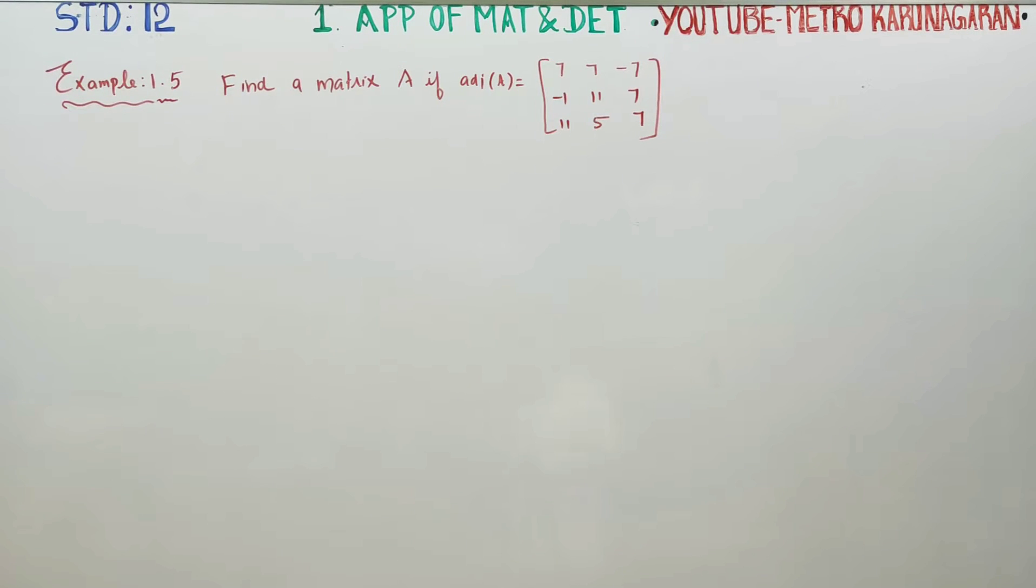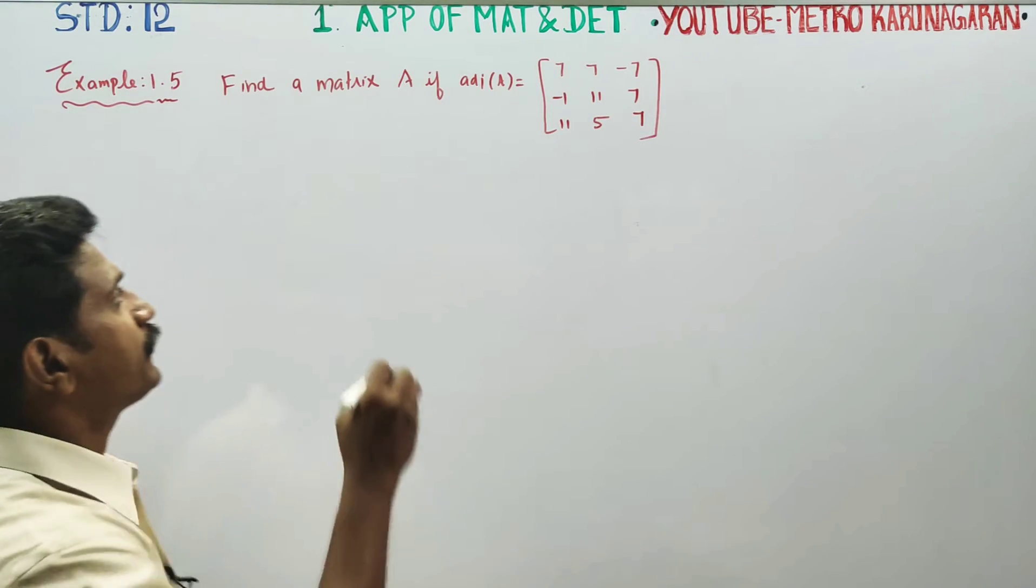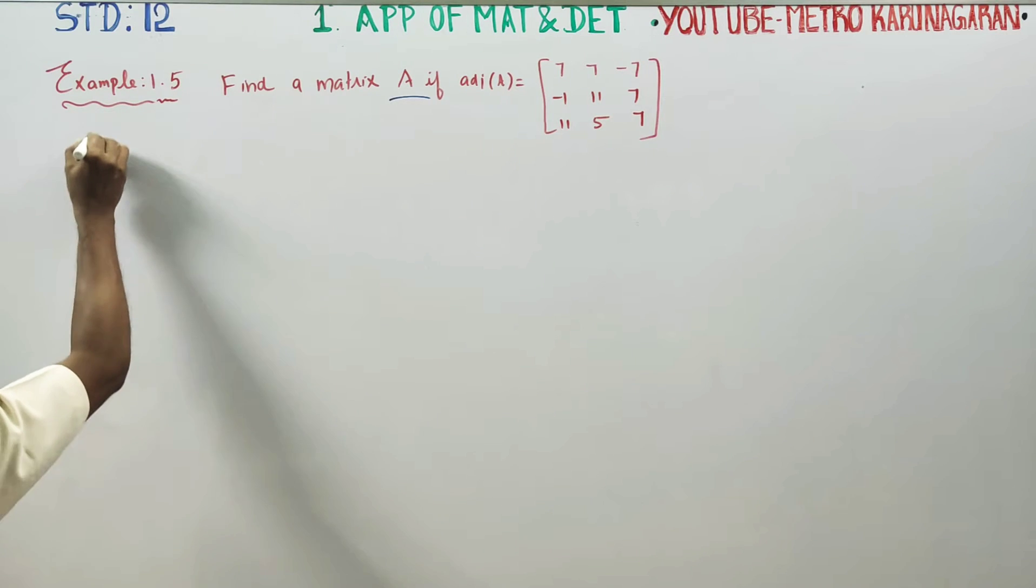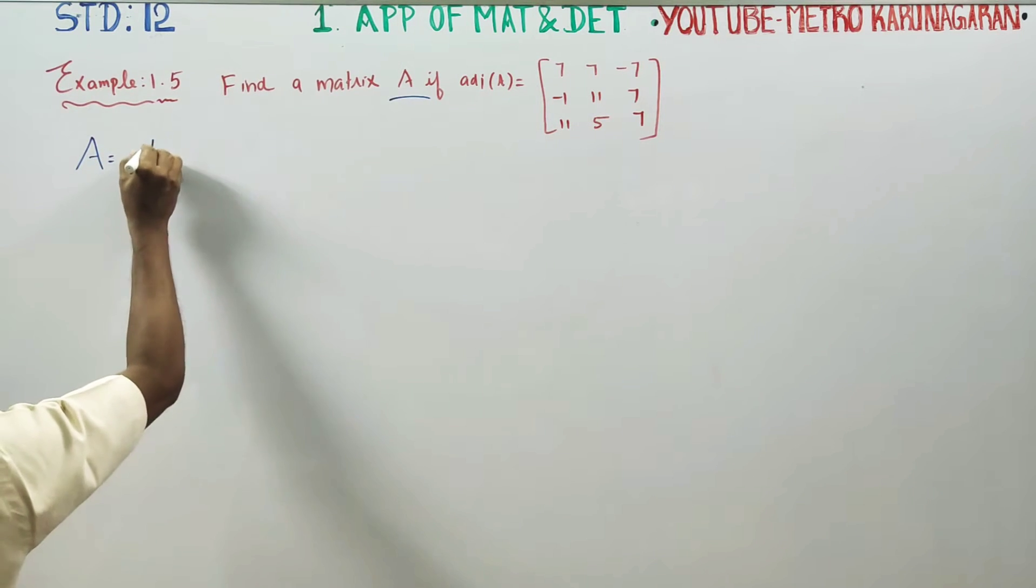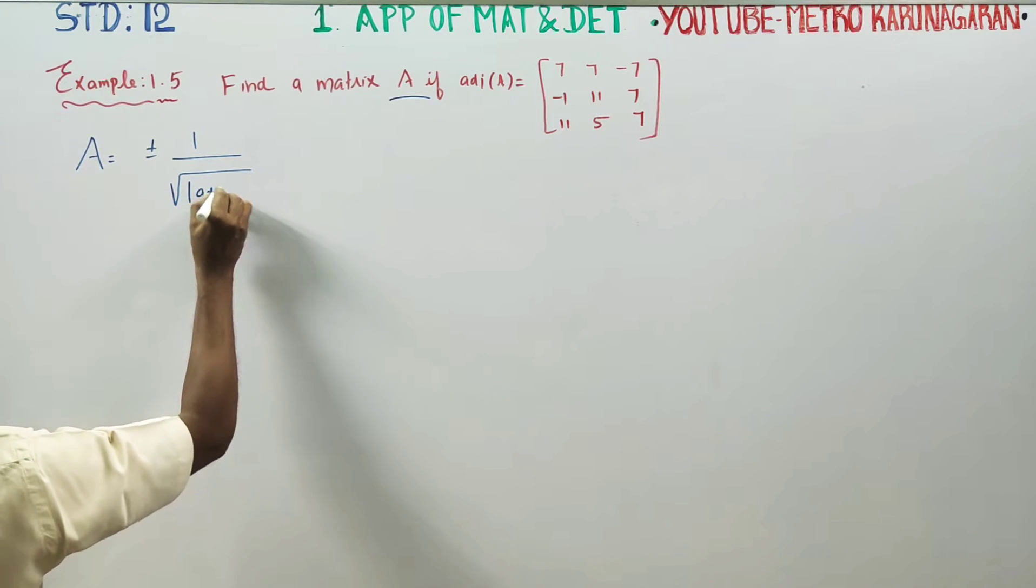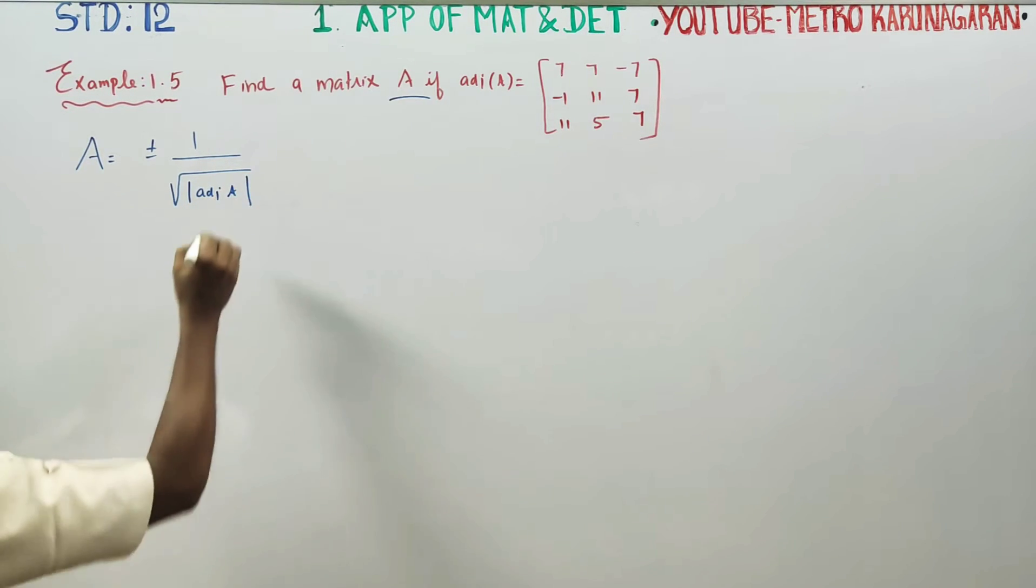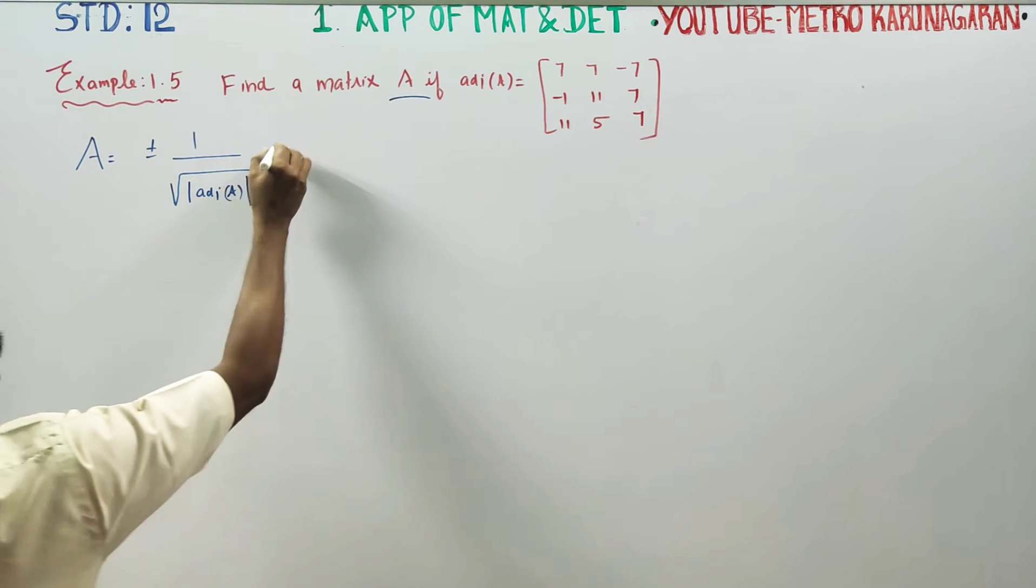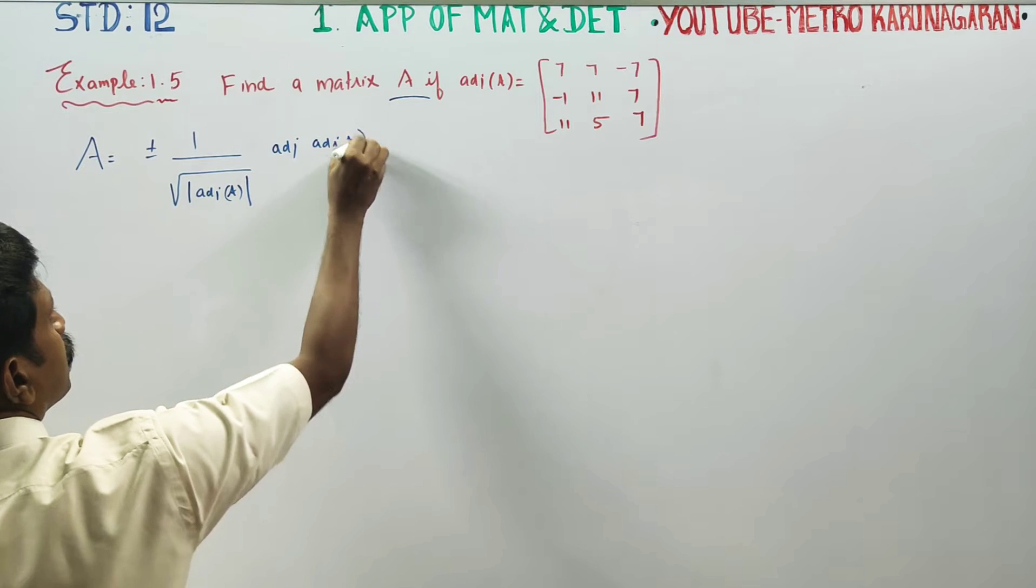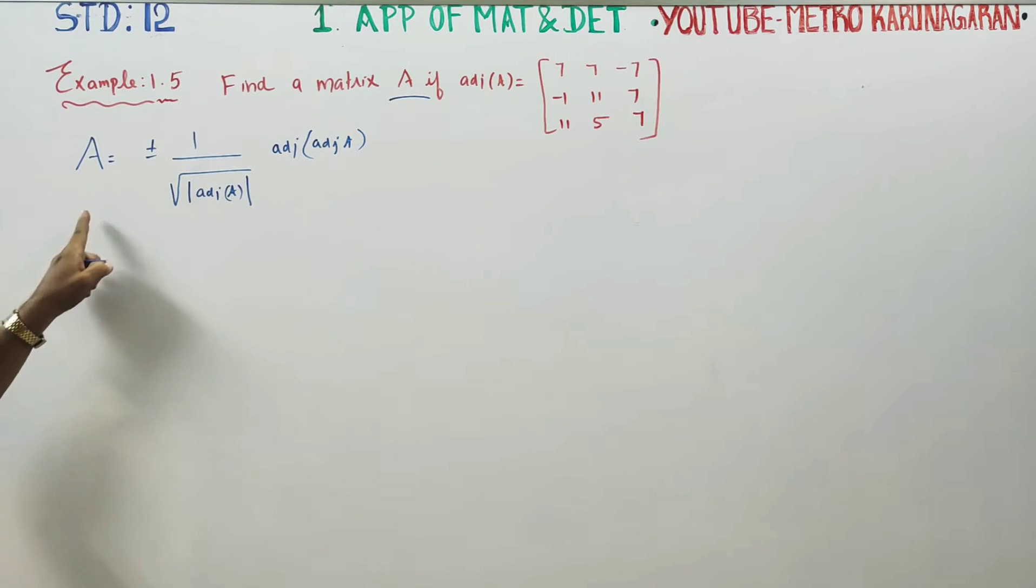Dear Toll standard students, in example 1.5, you have to find the matrix A if adjoint A is given. A would be the formula: plus or minus 1 by square root of determinant of adjoint A into adjoint of adjoint A. This is the formula.